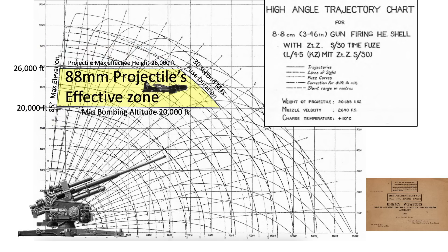We can bound the 88mm real-life heavy bomber effective zone in the shaded area. The zone is constrained by a 20,000 foot operational minimum altitude, 30-second projectile time of flight, 26,000 foot effective 88mm projectile ceiling, and the gun's 85 degree maximum quadrant elevation angle. The real-life effective zone is quite a bit smaller than the projectile's full trajectory.